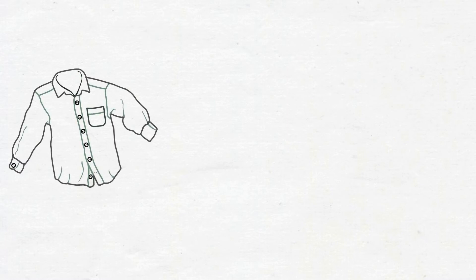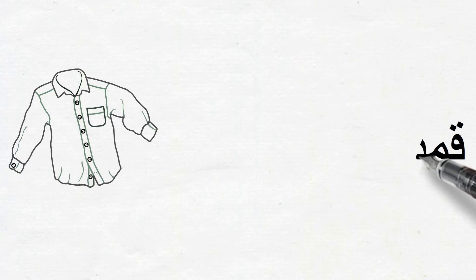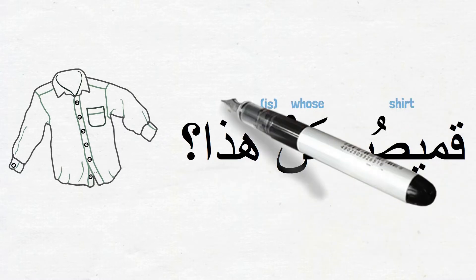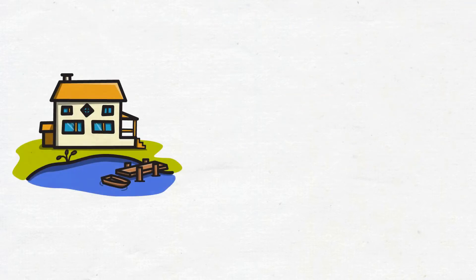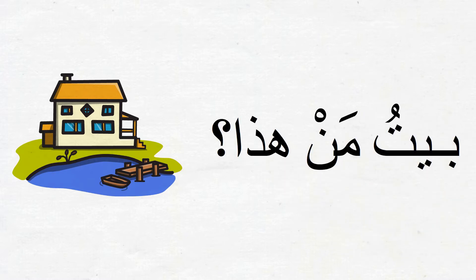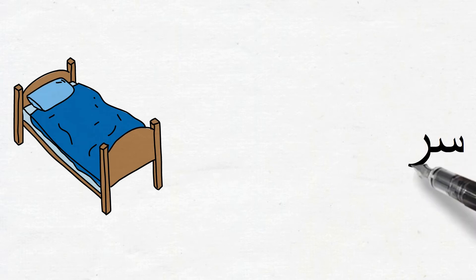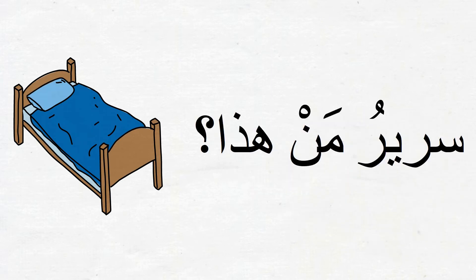How about this one? It is قَمِيصٌ — what would be the question? قَمِيصُ مَنْ هَذَا — Whose shirt is this? And this is بَيْتٌ — what would be our question this time? بَيْتُ مَنْ هَذَا — Whose house is this? And finally, let's use سَرِيرٌ — سَرِيرُ مَنْ هَذَا — Whose bed is this?